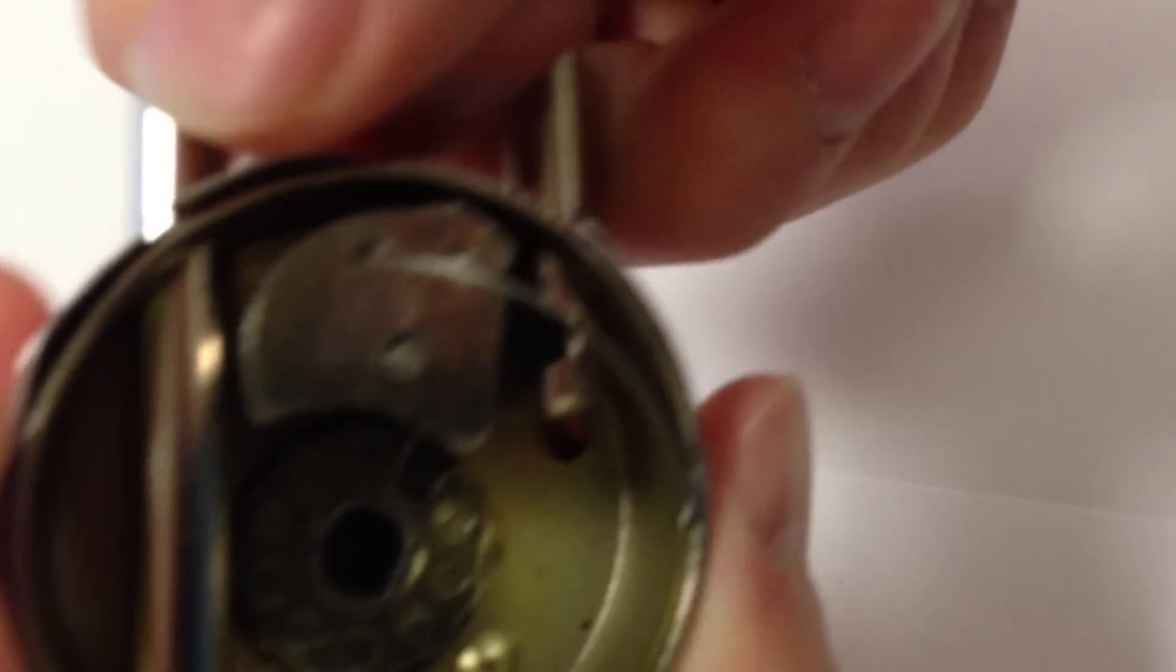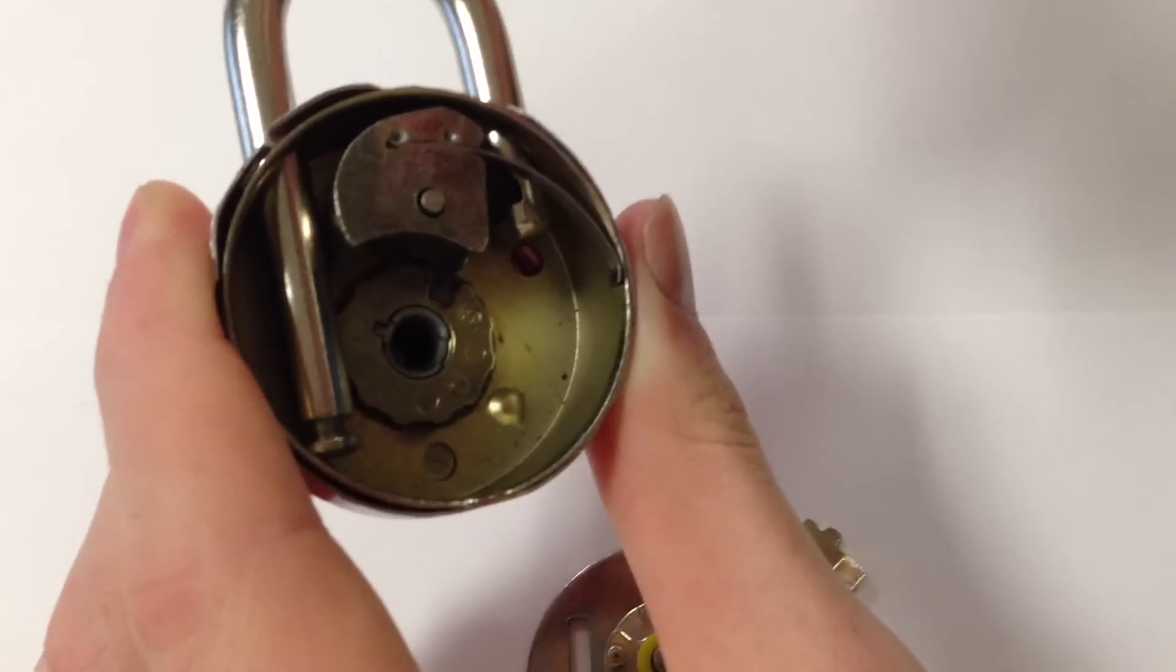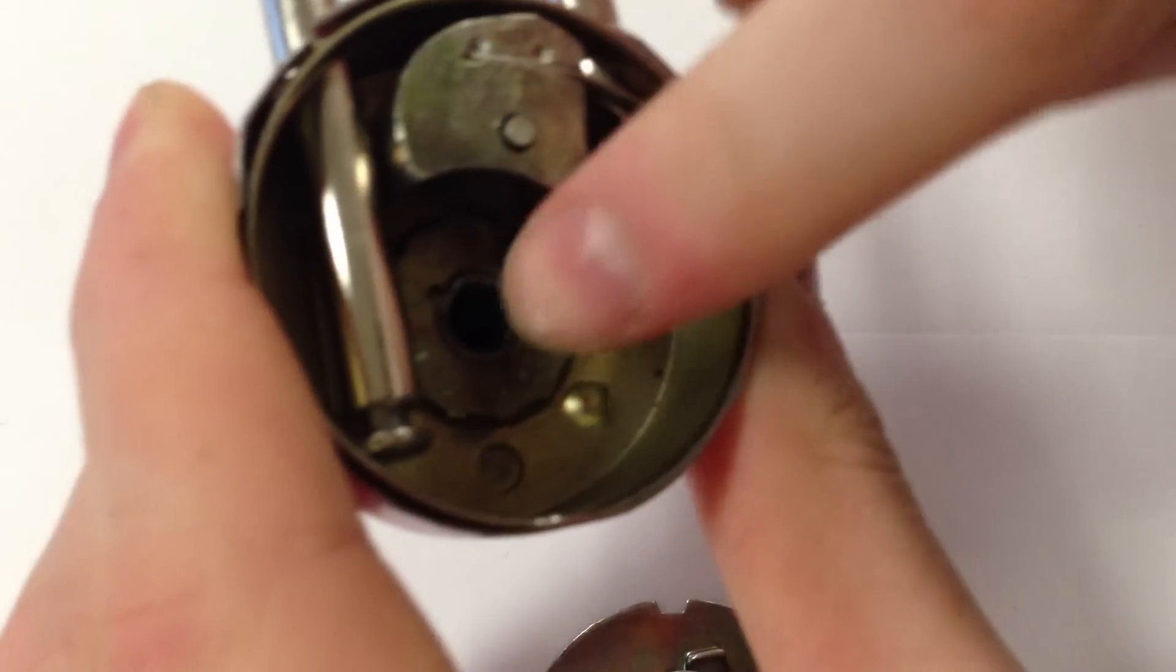So basically, what holds the lock closed is when you try opening the lock, you can see that the lever pivots around the bar, and the back of the lever is hitting against this wheel, which is attached to the combination dial in front. It's hitting against the wheel,